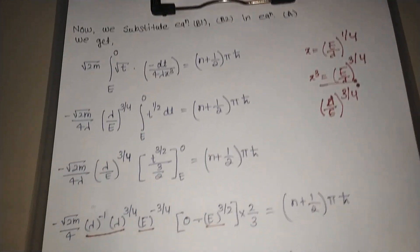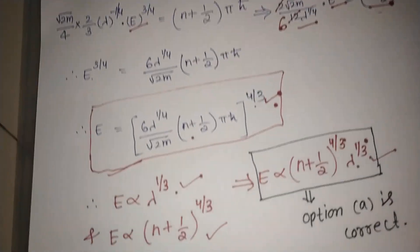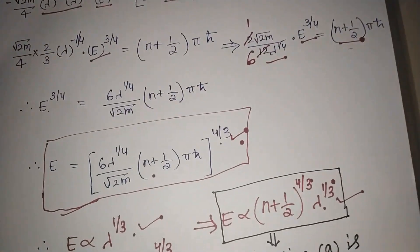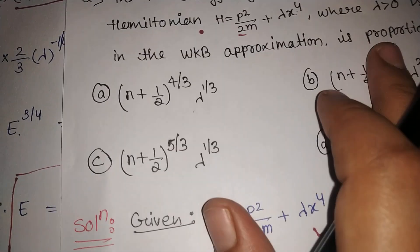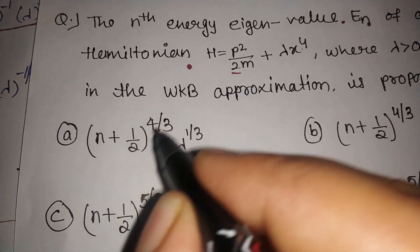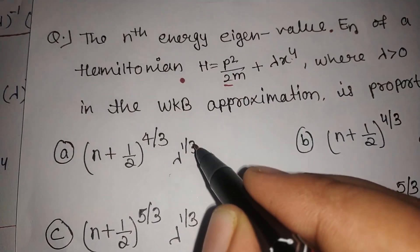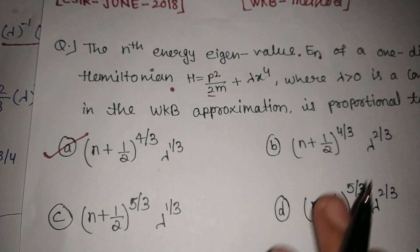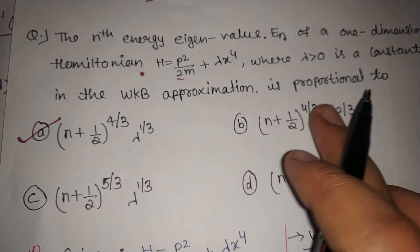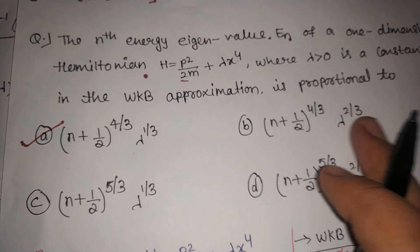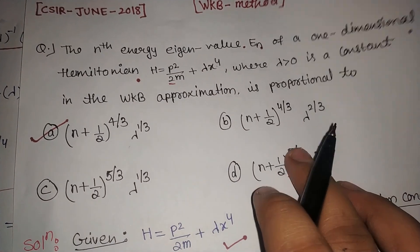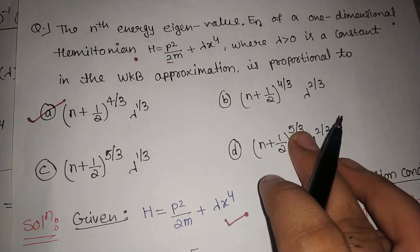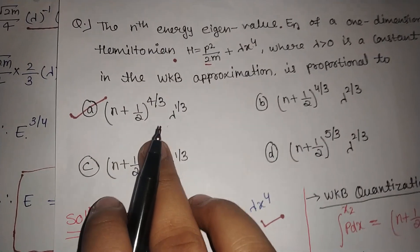So option A is correct, which gives E ∝ (n + 1/2)^(4/3) · λ^(1/3). Notice that the power of n is 4/3 while λ has a different exponent — that is exactly why we could not use the trick method to solve this problem.